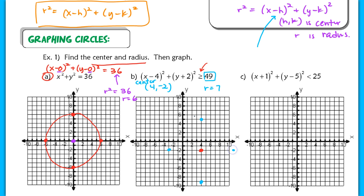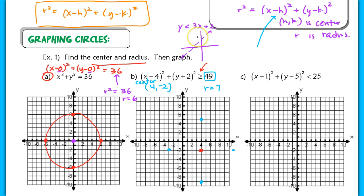Before connecting these points, let's talk about that inequality symbol. When you graph something like y is less than 3x plus 2, the line is dashed because there's no 'equals' underneath. In this case, it's a circle, and when we have the greater than or equal to symbol, we draw a solid curve connecting these points.